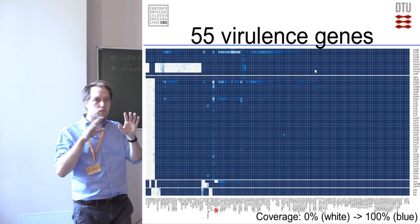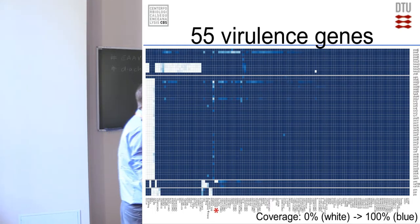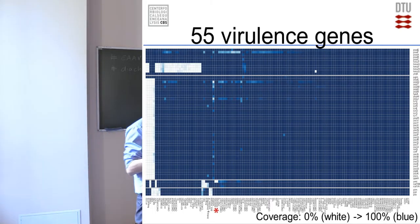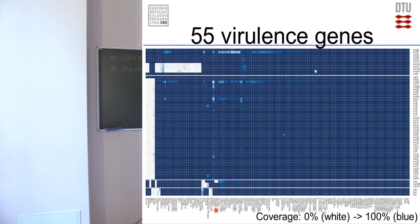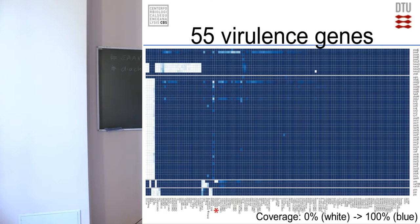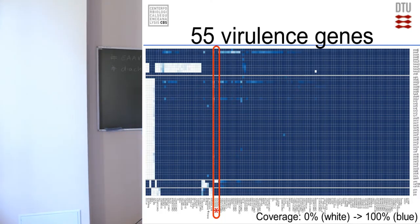This was just about finding that these strains are actually plague and when it diverged. But we also wanted to see what it is actually capable of — could it cause plague as we know it from modern strains and from the pandemics? We looked at 55 different virulence genes — there are probably many more, but these are the ones we investigated. If a dot is blue, it means we've seen the gene; if white, we haven't. When you look at the two Bronze Age samples, they actually have all the genes except for one — the YMT gene.